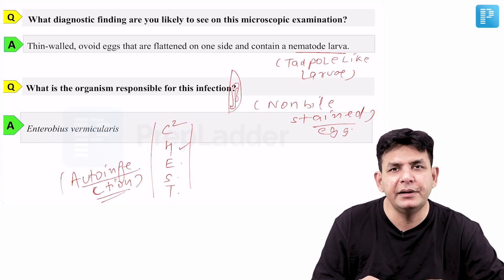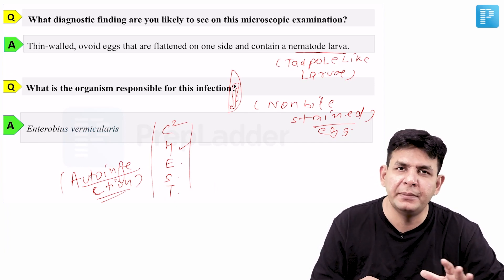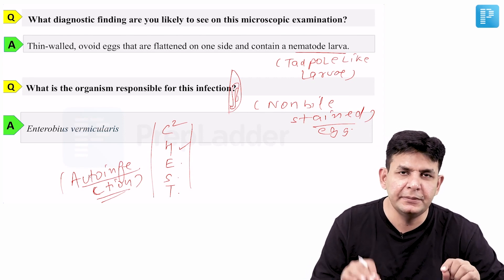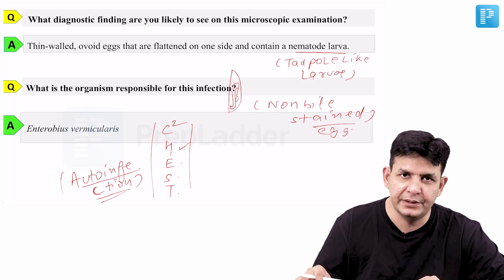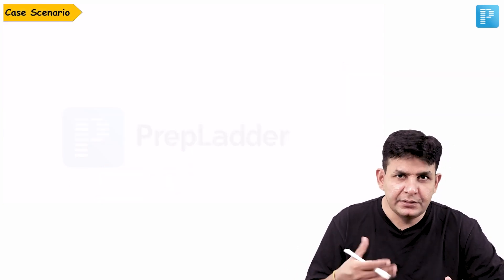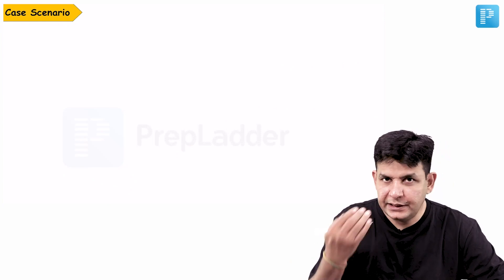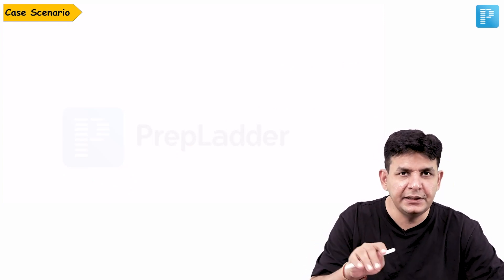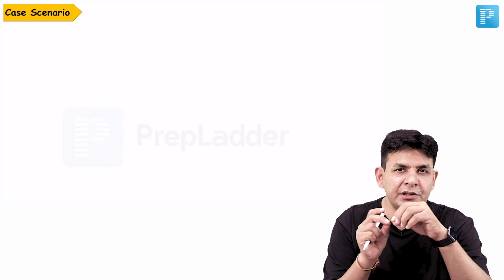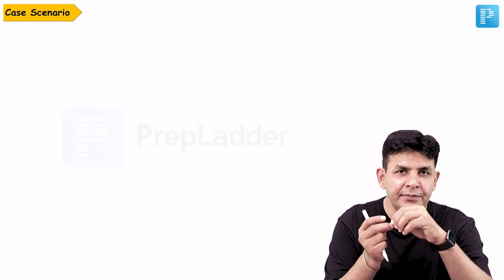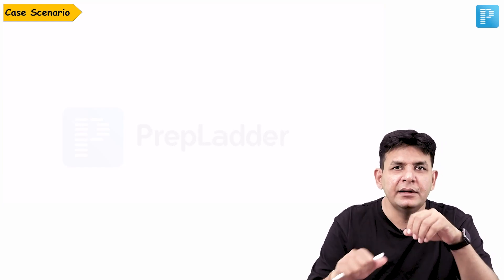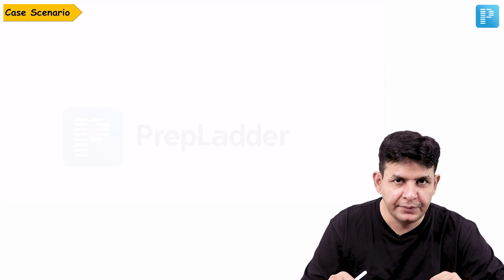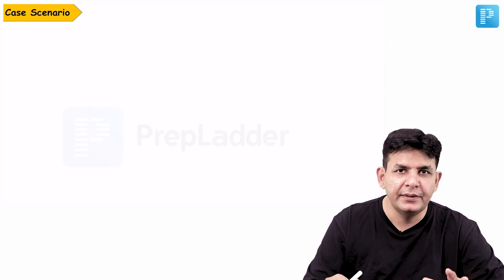For treatment, Albendazole or Mebendazole is given. The most common feature is perianal pruritus. Infection occurs by ingestion — when the child scratches the anal area, the eggs deposit into the nails, and after some time the child puts that finger in their mouth, completing the auto-infection cycle.